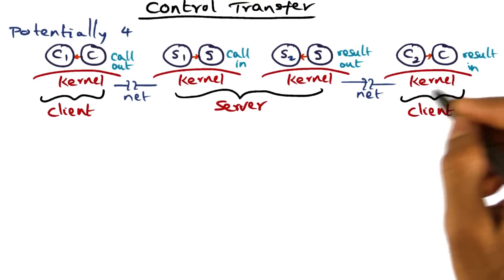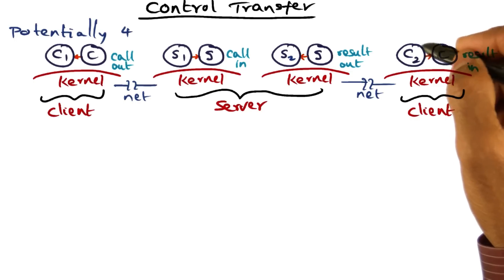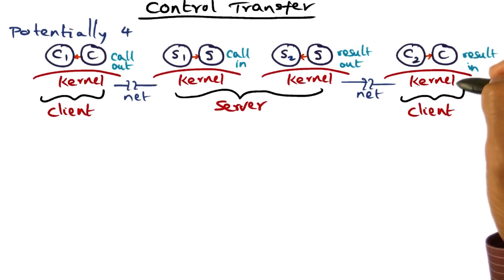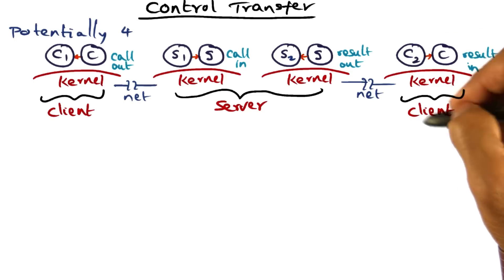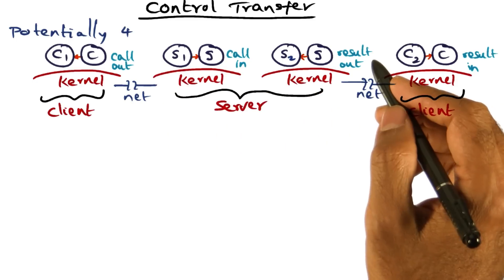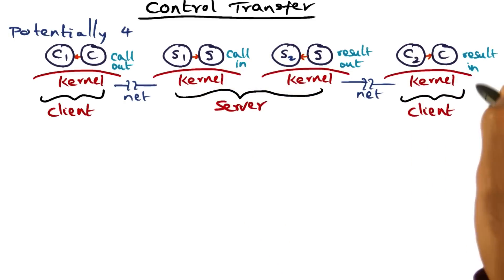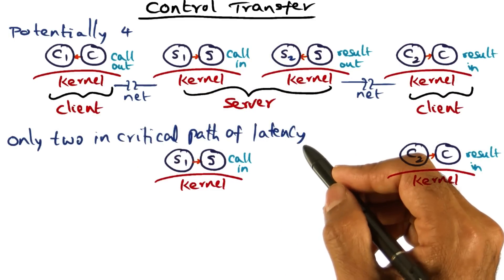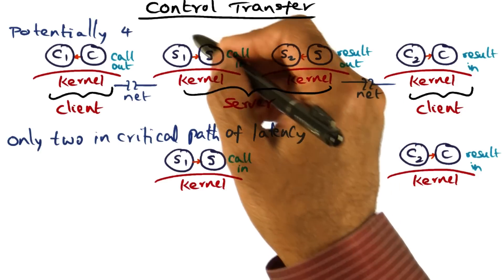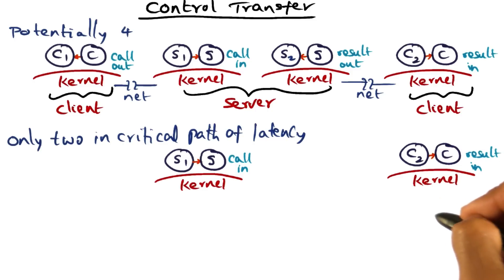When the result comes back, the client box is executing some process C2. The kernel has to switch to this client so that it can receive the results and continue with its execution. This context switch is again in the critical path of RPC latency. Looking at the RPC call, only two context switches are in the critical path of RPC latency: the context switch that happens on the server machine when the call comes in, and the context switch that happens on the client machine when the results come in.